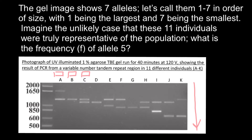Now let's give names to the alleles. This is going to be allele number one, these alleles are going to be number two, next we have allele number three, then number four, then number five, and number six, and number seven.